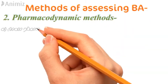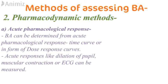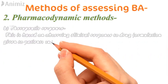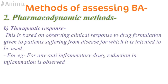Coming to pharmacodynamic methods: in acute pharmacological response, bioavailability can be determined from an acute pharmacological response vs. time curve or in the form of a dose-response curve. Acute responses like dilation of the pupil, muscular contraction, or ECG can be measured using this method. The therapeutic response method is based on observing clinical responses to the drug formulation given to a patient suffering from the disease for which it is intended — for example, for an anti-inflammatory drug, reduction in inflammation is observed.